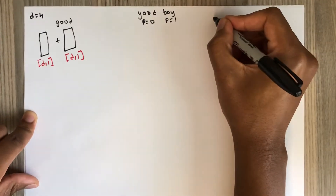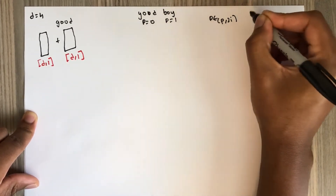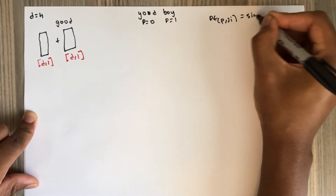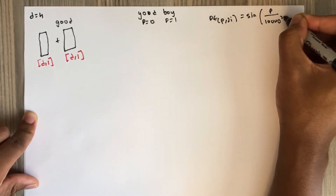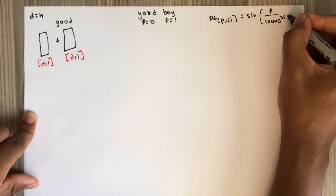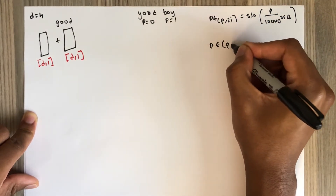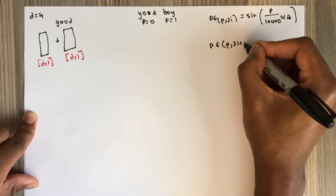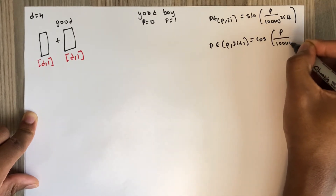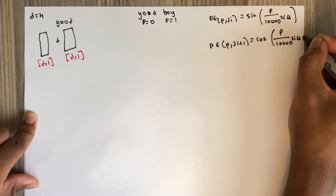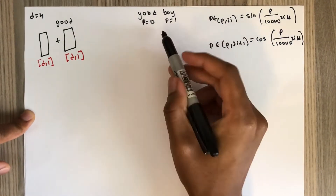Let me write the set of formulas we are going to use. The first formula is: PE(p, 2i) = sin(p / 10000^(2i/d)). The second formula is: PE(p, 2i+1) = cos(p / 10000^(2i/d)). Here p is the position, so for the word 'good' we are going to use p = 0.